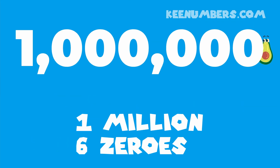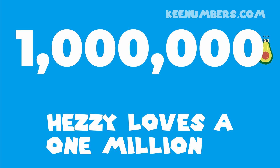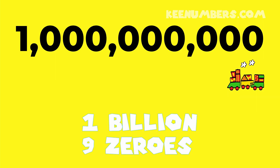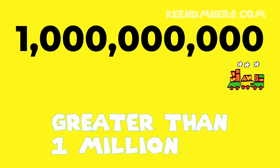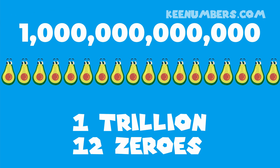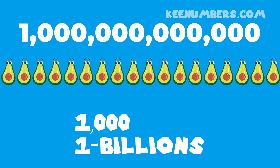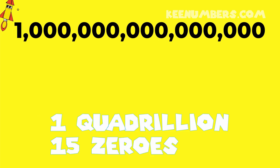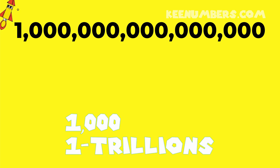One million — six zeros. One billion — nine zeros, greater than one million. One trillion — twelve zeros, one thousand one billions.